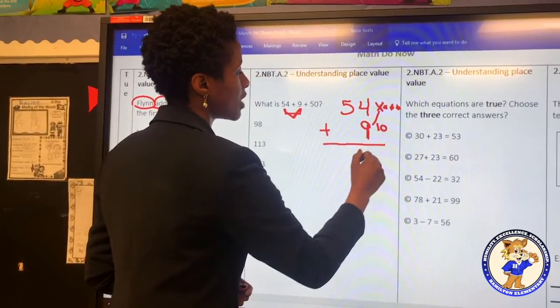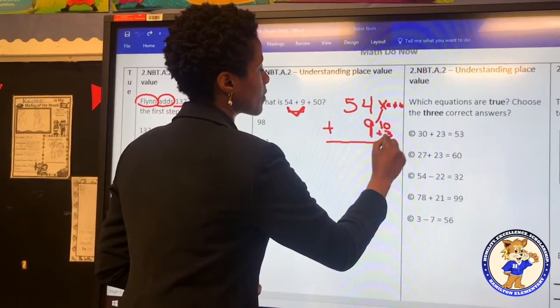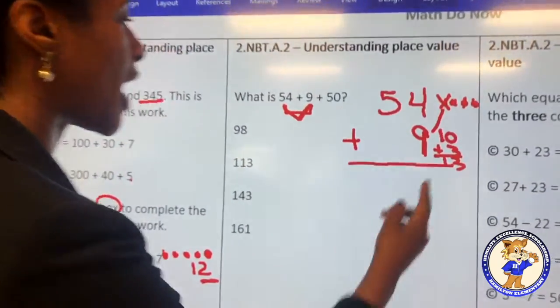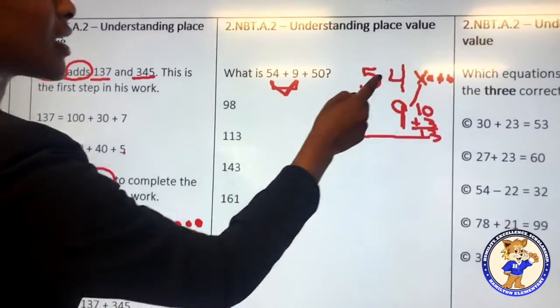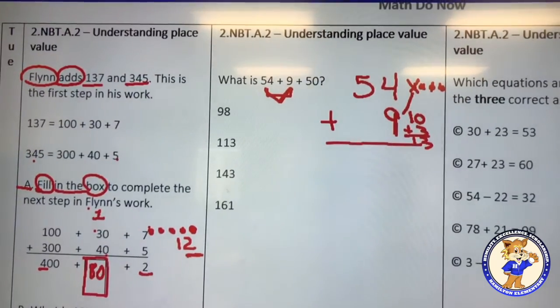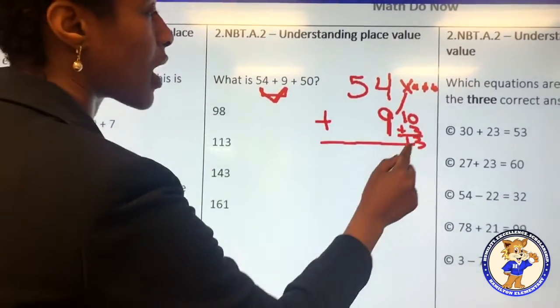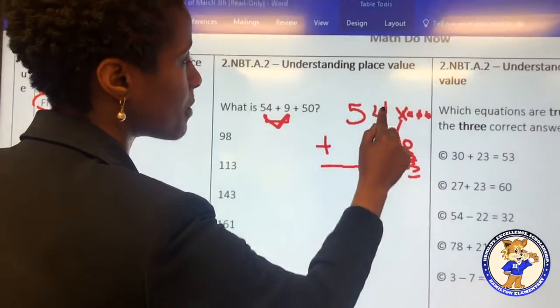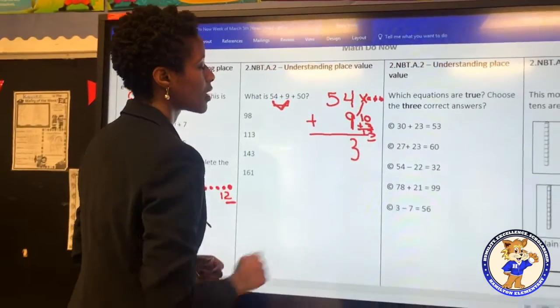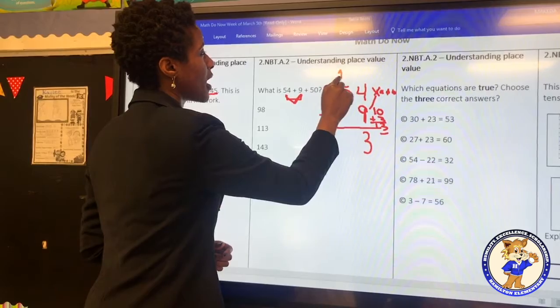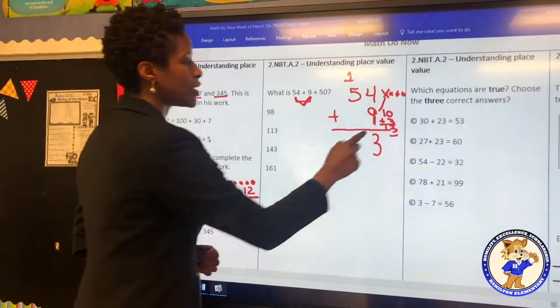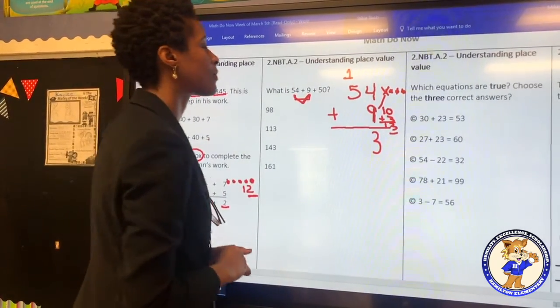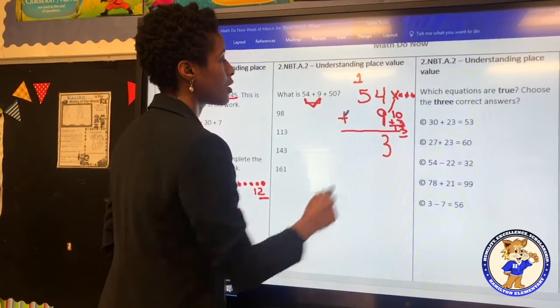So, since 10 plus 3 is 13, that means 9 plus 4 is also 13. We have to do the same thing we did here because we're adding not just the ones, but we have tens, a number in the tens place. So, we cannot just write our answer here as 13. We must use the number in the ones place and put it here underneath the ones column. Go here at the top and carry 1 ten because we need to make sure we're not forgetting about that 1 ten in the number 13. 1 plus 5 equals 6.